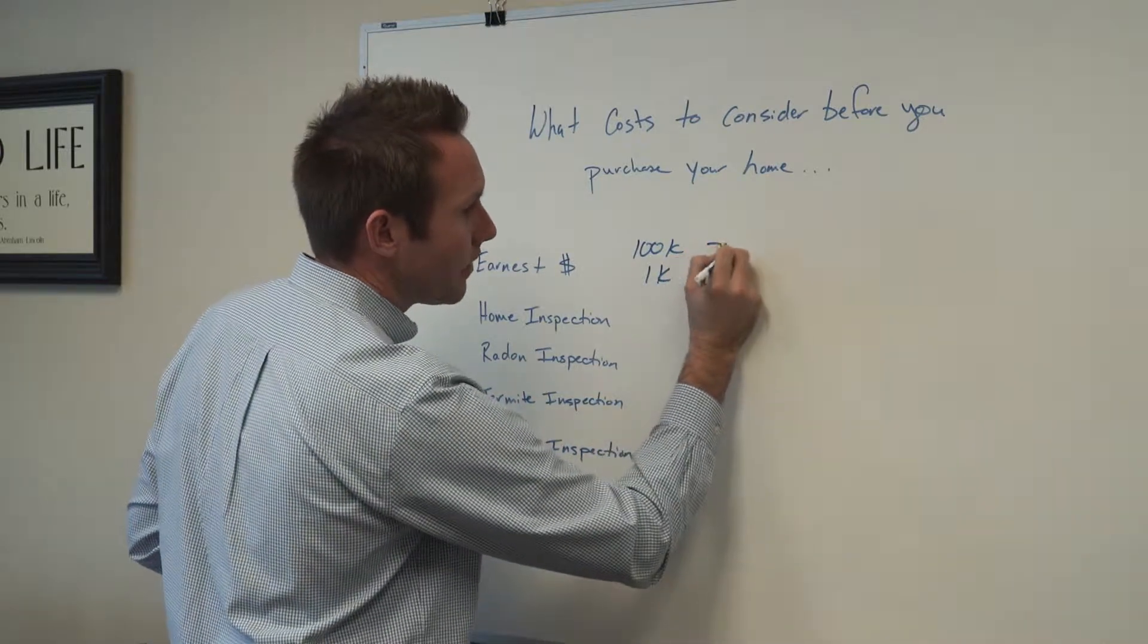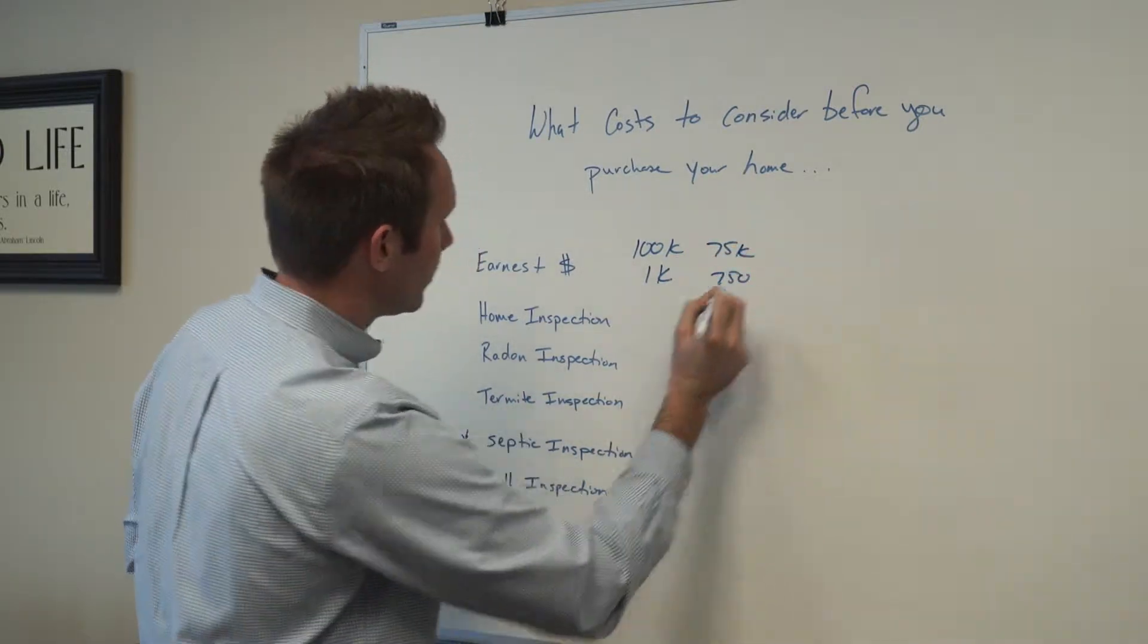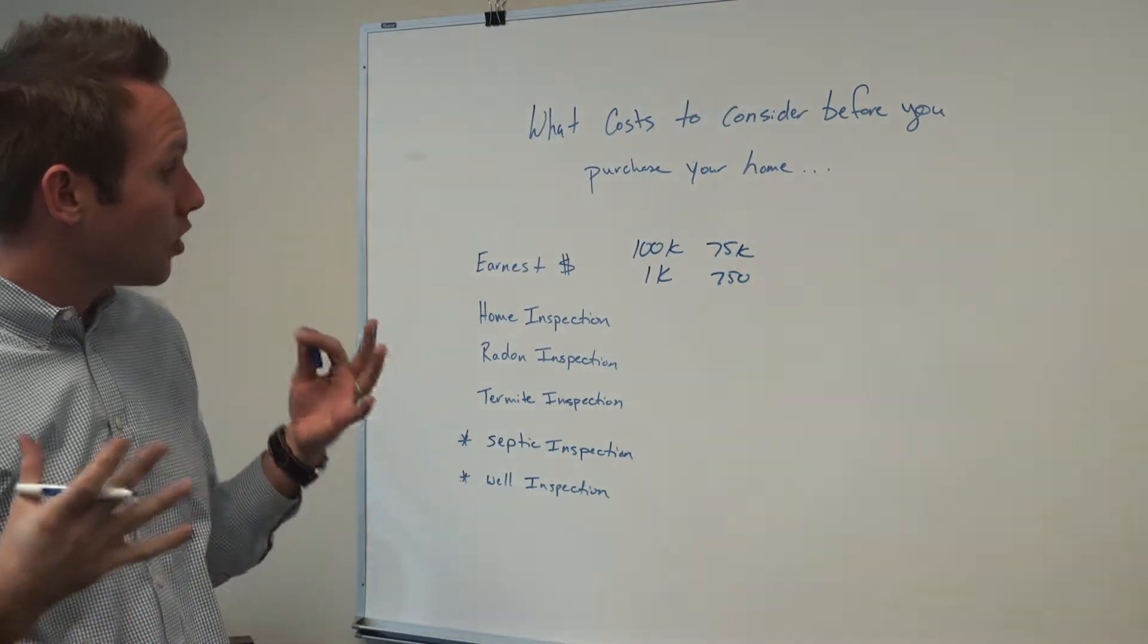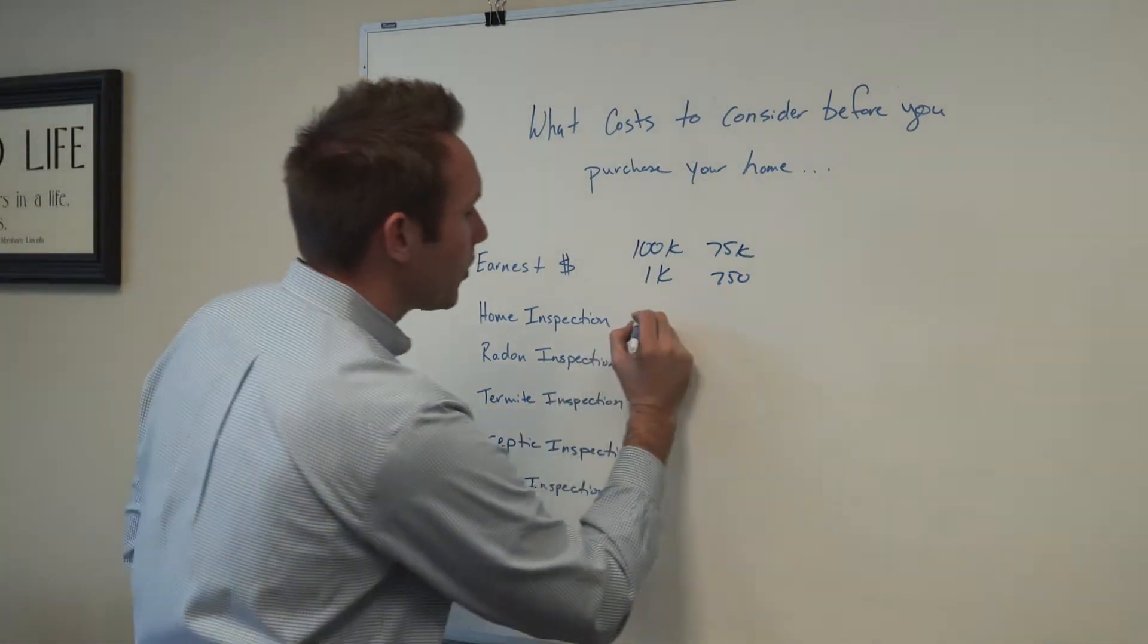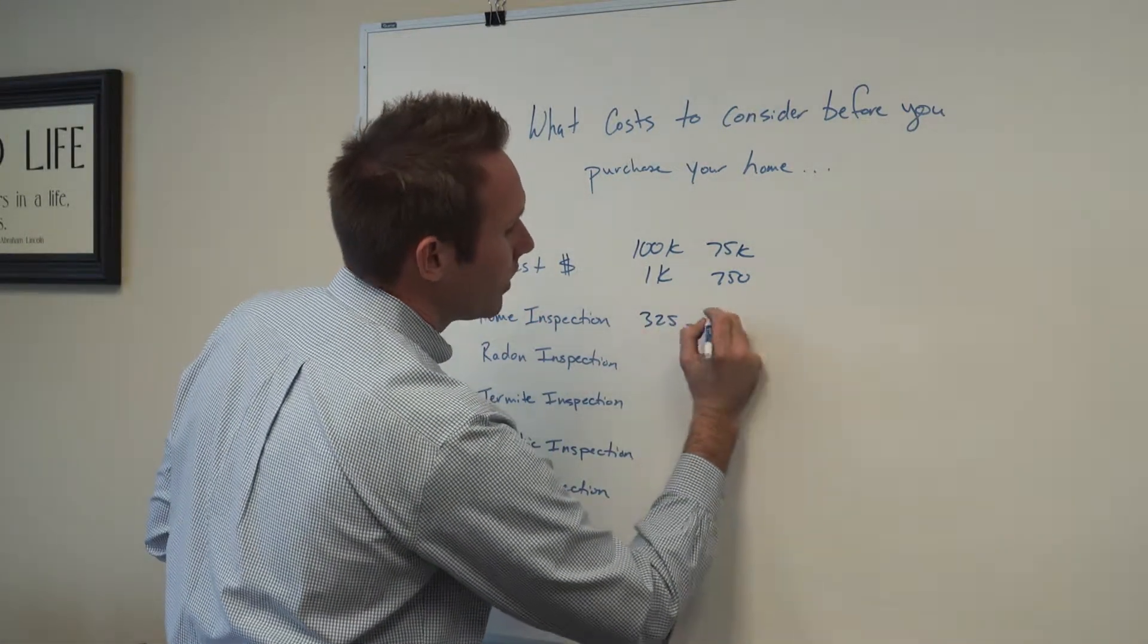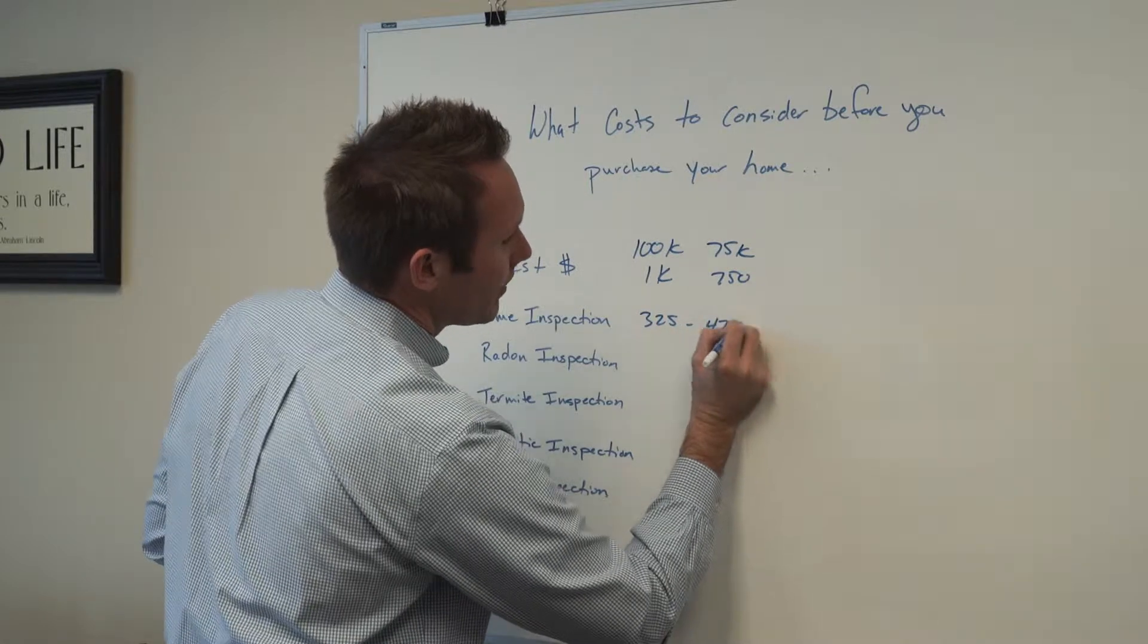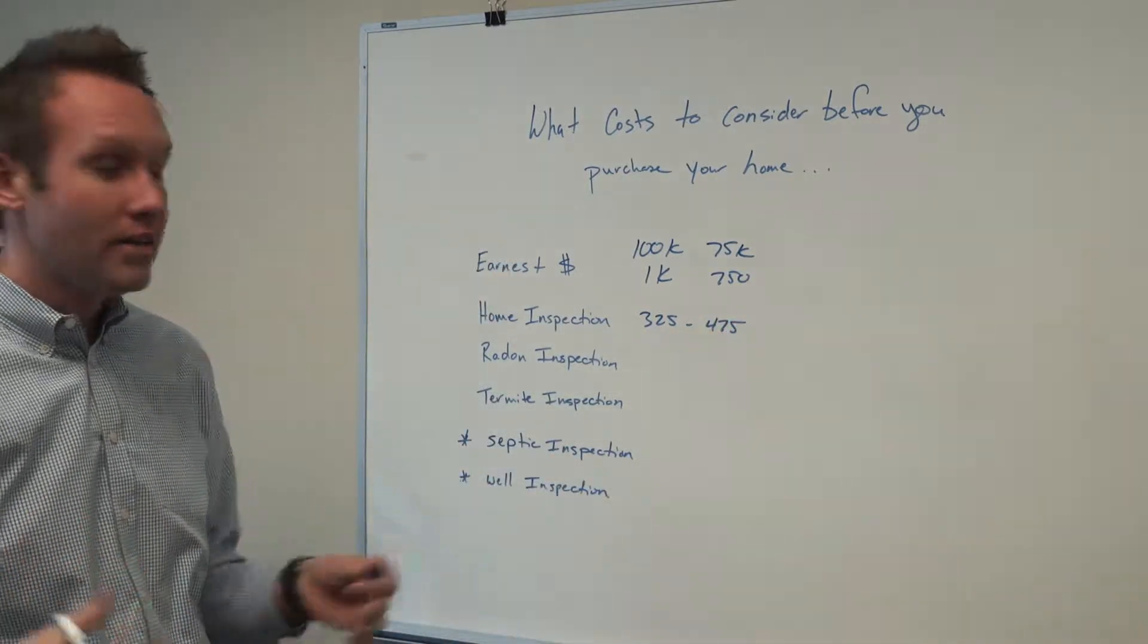Same goes for a $75,000 home, approximately $750. Next, the home inspection. The home inspection cost is normally anywhere from $325 to $475, depending on location and size of the home.